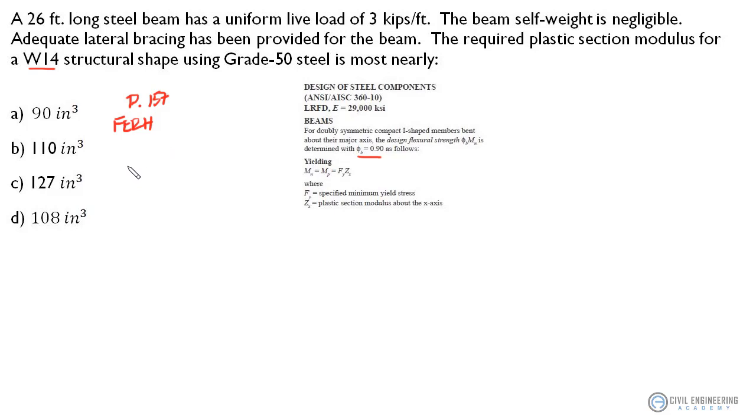Okay, so let's solve for the ultimate moment that is being induced into this beam or M sub U. Remember the underlying concept for LRFD or strength design is that your ultimate strength, in this case we're talking about ultimate moment, must be less than or equal to LRFD, the resistance factor times your nominal strength, in this case your nominal moment strength.